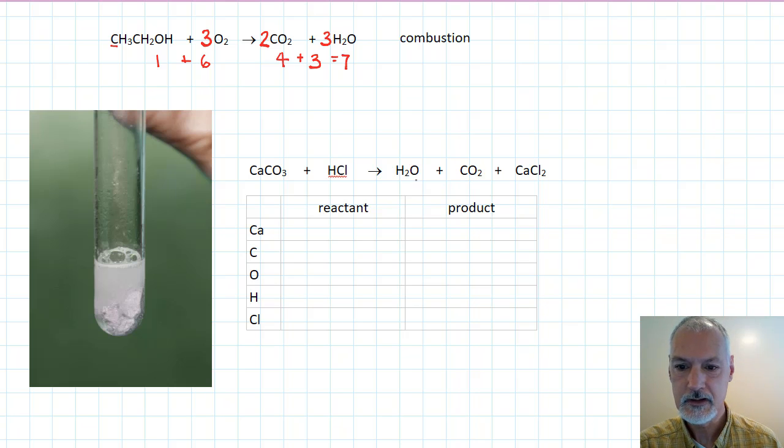Now the hydrogens, two on this side, so I'm going to double this up, so that'll balance now the hydrogen situation with two on each side, two chlorines and two chlorines. So we now have a balanced chemical reaction.